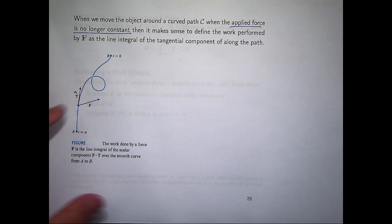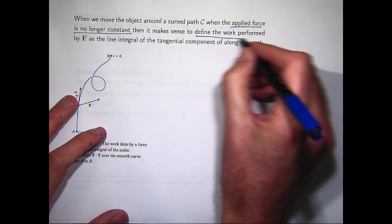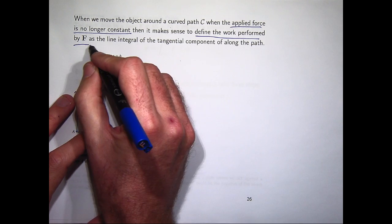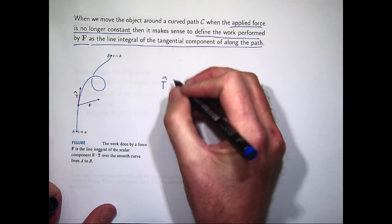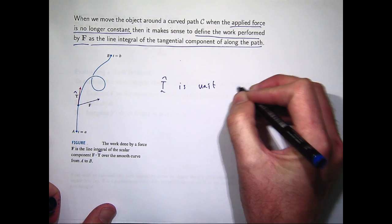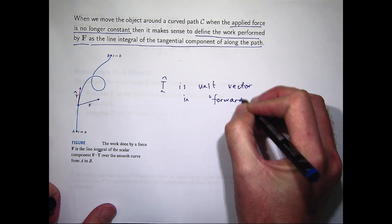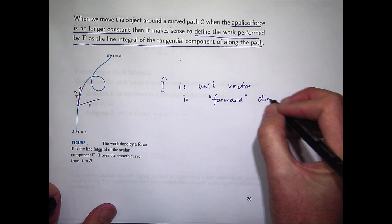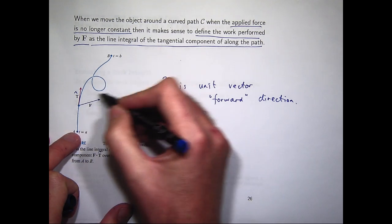With a little bit of justification, it makes sense to define the work performed by F as the line integral of the tangential component along the path. So the tangential component sort of points in the forward direction, or the direction of motion in some sense. Here the T hat is the unit vector that corresponds to the forward direction.